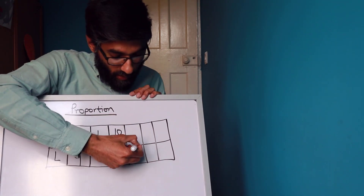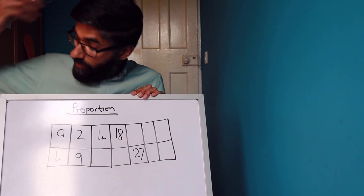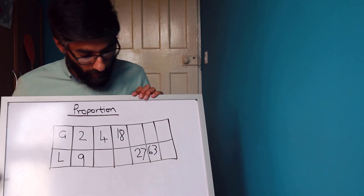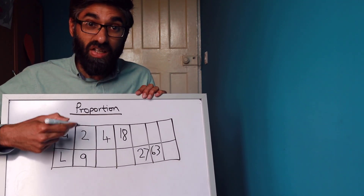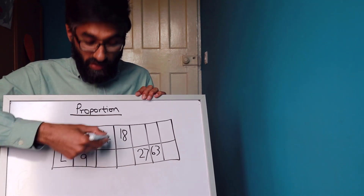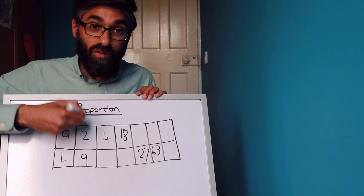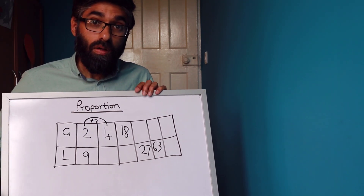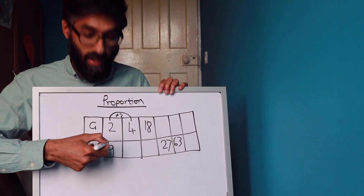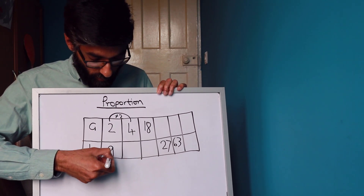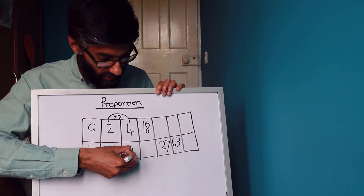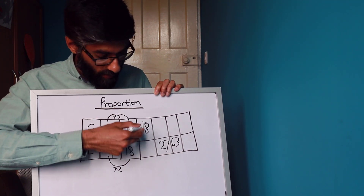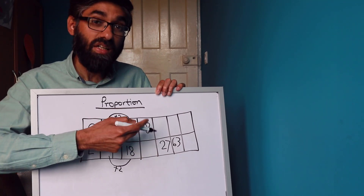We also have 18 gallons, 27 liters, and 63. Two gallons is nine liters. For four gallons, look at the relationship between two and four — we're multiplying by two. So we multiply the liters by two as well: nine times two is 18. So four gallons equals 18 liters.